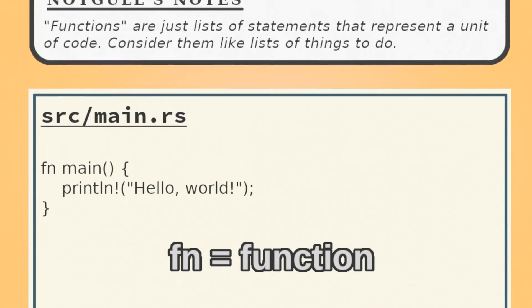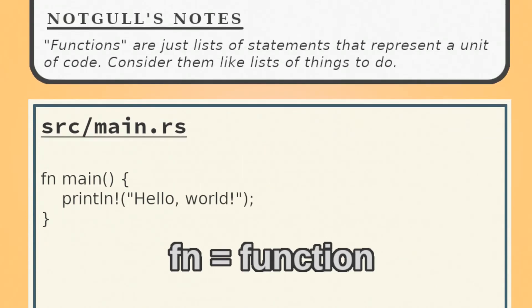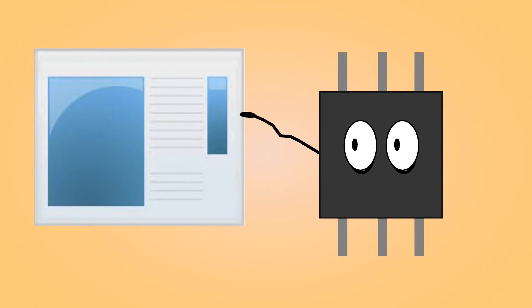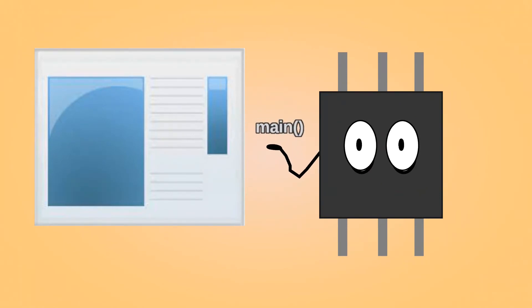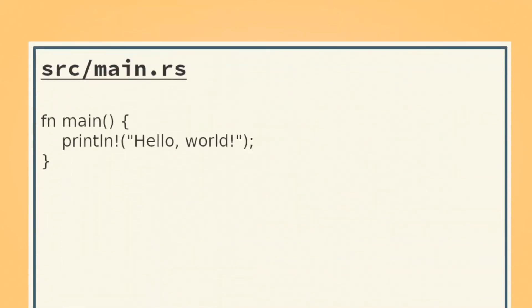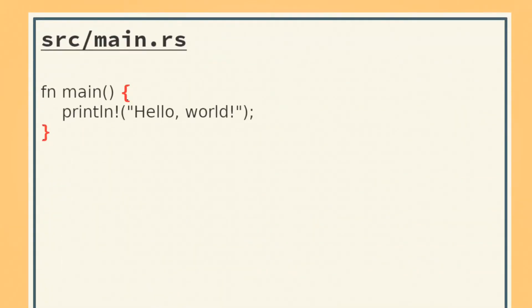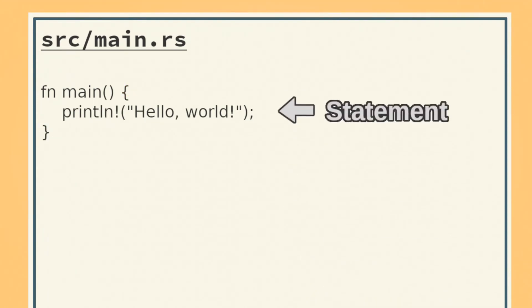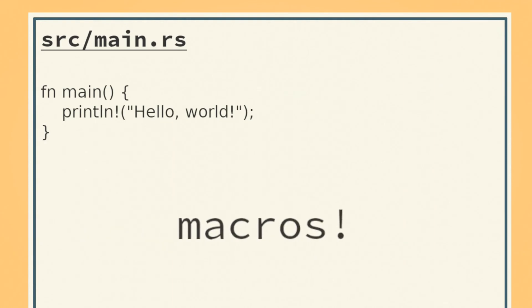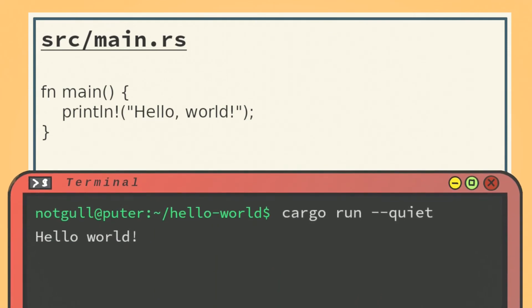Let's break down this program. fn is how you define a function, and here we're defining the main function. The main function is a special function that the computer looks for when you run the executable as the program's entry point, or the first thing that it runs. Every statement within these curly brackets is considered to be a part of the function. In this case, there is only one statement — the print line macro. What a macro is is outside the scope of this tutorial, but print line just means print a line's worth of text to the console. In this case, the line is hello world, which, if we check, is what was printed to the console.